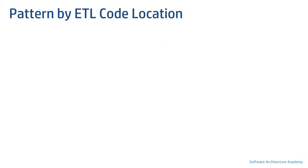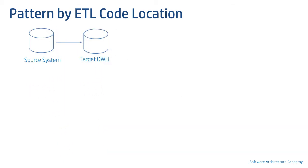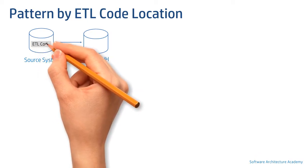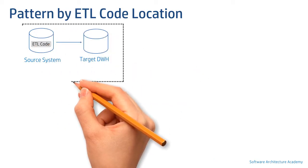The first segmentation of patterns is by where exactly the ETL code or processes are located. Consider a source system and a target data warehouse. ETL code can reside in the source system, where it usually pushes the data to its destination. This is our very first pattern: ETL code at the source system.